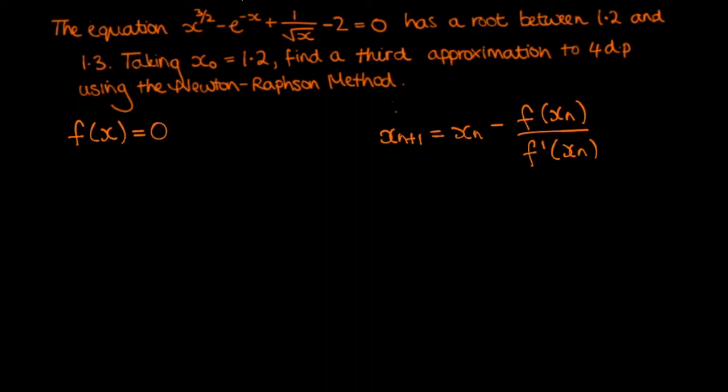So f of x is x to the power 3 over 2 minus e to the minus x plus 1 over the square root of x minus 2. That's f of x. And in order to find f prime of x, we just differentiate f of x. So f prime of x is equal to 3 over 2 x to the half.